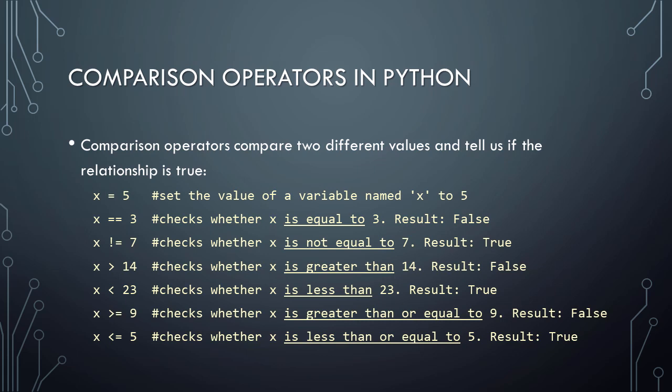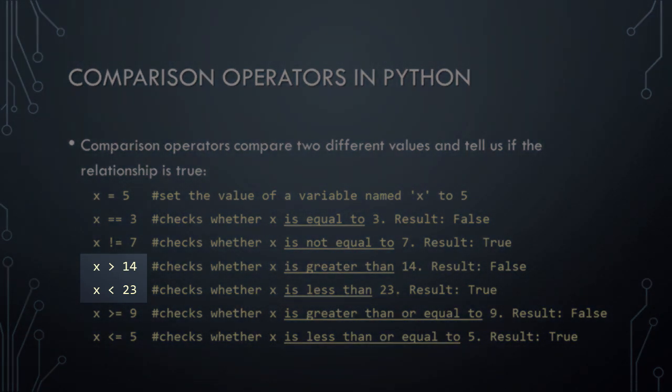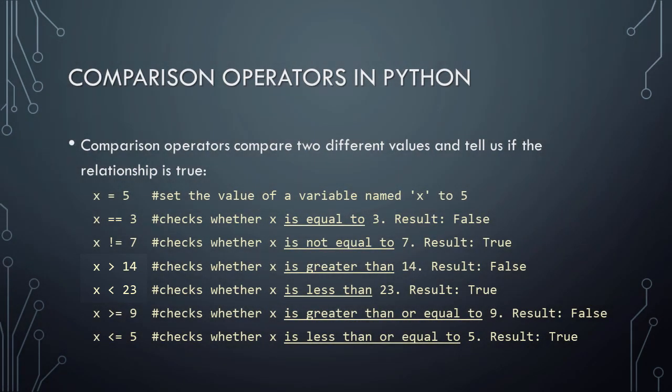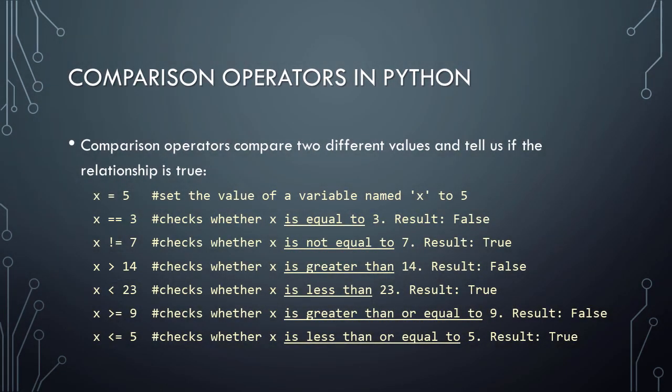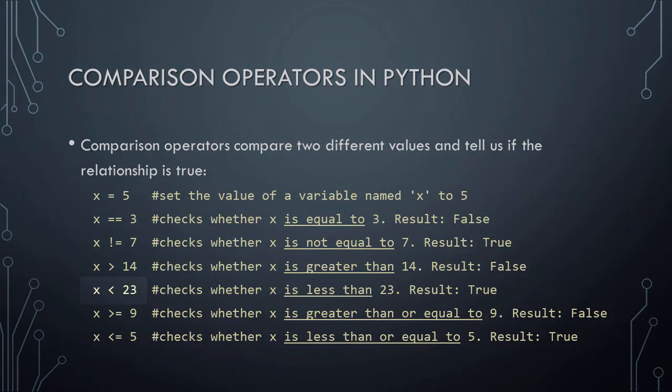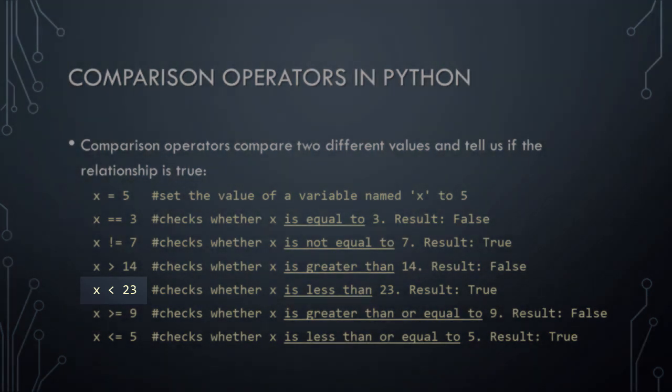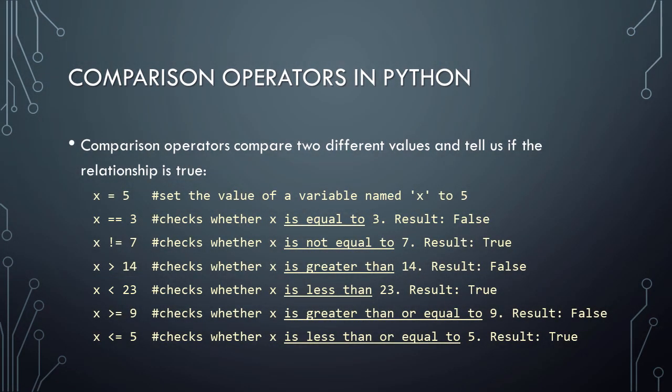Our next two comparison operators represent greater than and less than respectively. The first example tests whether x is greater than 14, which of course is false, because x equals 5. The next example tests whether x is less than 23, which, based on the current value of x, evaluates to true.